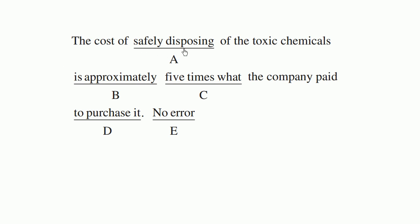The cost of safely disposing of the toxic chemicals is approximately five times what the company paid to purchase it. So this first part reads a little bit weird, but I think it's right. The cost of safely disposing of the toxic chemicals. Yeah, there's a lot of 'ofs' there, but I think that's right.